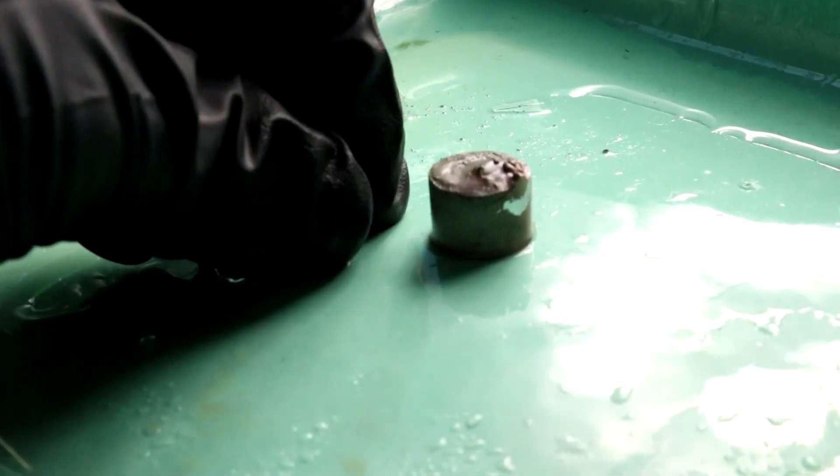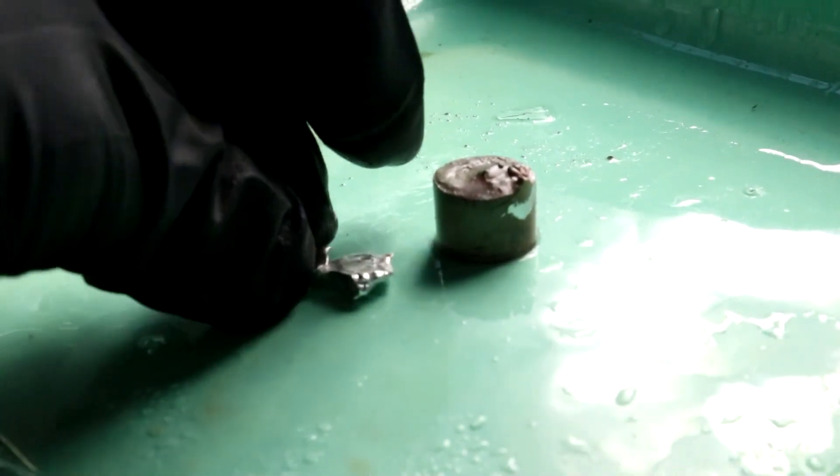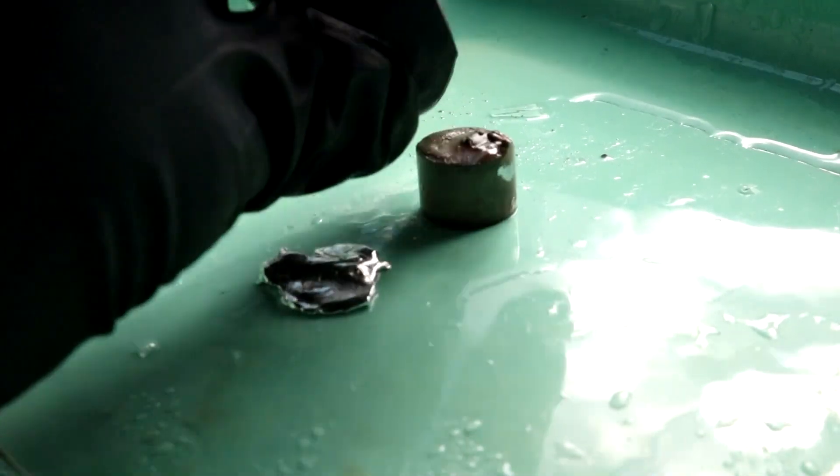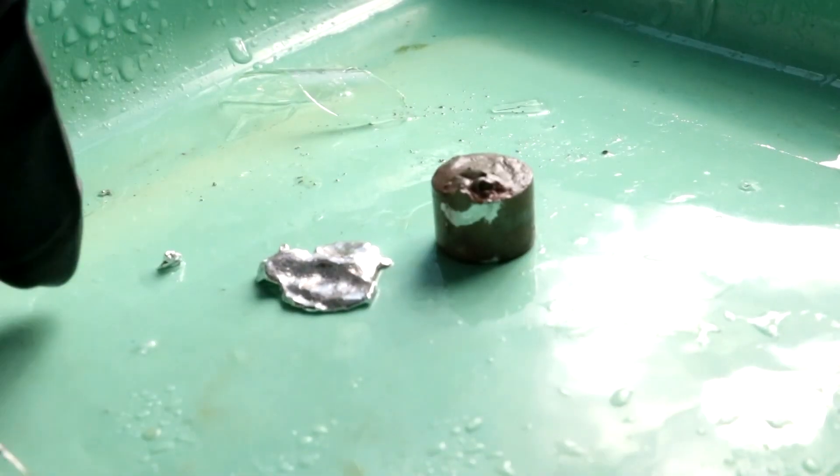In case you're wondering how I'm going to turn this back into mercury metal. Well, just heat it up to about 800 degrees Fahrenheit. And the mercury will boil right off. Of course to get it all out you would have to melt the copper.